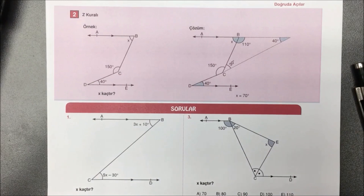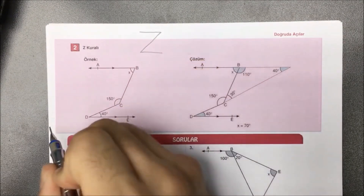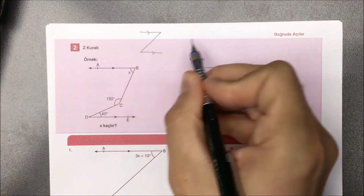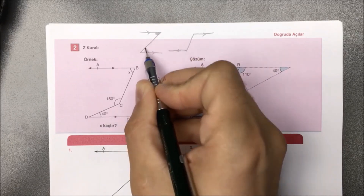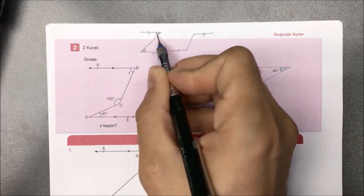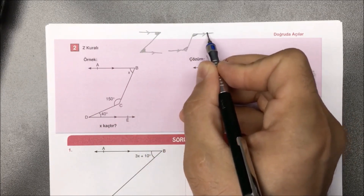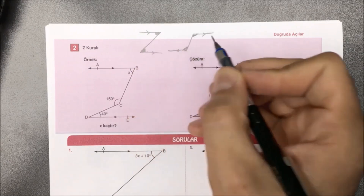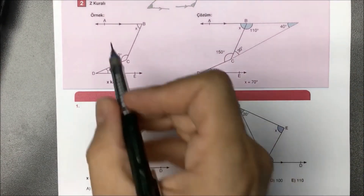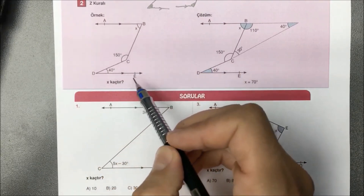İkinci türdeyiz: Z kuralından bahsedeceğiz. Z kuralı, normal bildiğimiz Z harfi gibi; şu ikisi birbirine paralel olmak zorunda. Bu durumda, Z ya da ters Z yaptığımızda buradaki iki açı birbirine eşit olur. Paralel doğrularda Z veya ters Z şeklini gördüğümüzde o açıların birbirine eşit olmasına Z kuralı denilir. Çözümlü örneklerde gördüğünüz gibi bu soruda bir Z harfi yok.